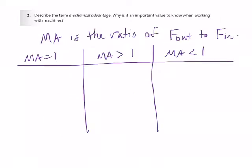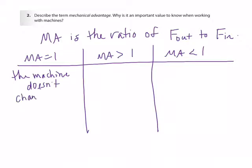In the second question, it says: describe the term mechanical advantage. Why is it an important value to know when working with machines? Mechanical advantage is the ratio of output force to input force. It's important because you can categorize every machine into one of three types. A machine with a mechanical advantage equal to one doesn't change your force at all — it just changes the direction.